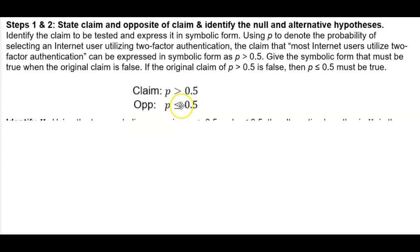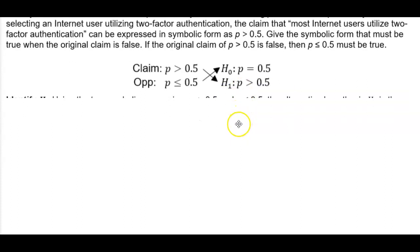Remember, the equality is always going to be in the null, and then this is going to be the alternative hypothesis. As you can see here, we have an arrow that's pointing where the equal sign is, so therefore the null has P which is equal to 0.5, and therefore this claim is now going to be the alternative hypothesis, which is then P is greater than 0.5.